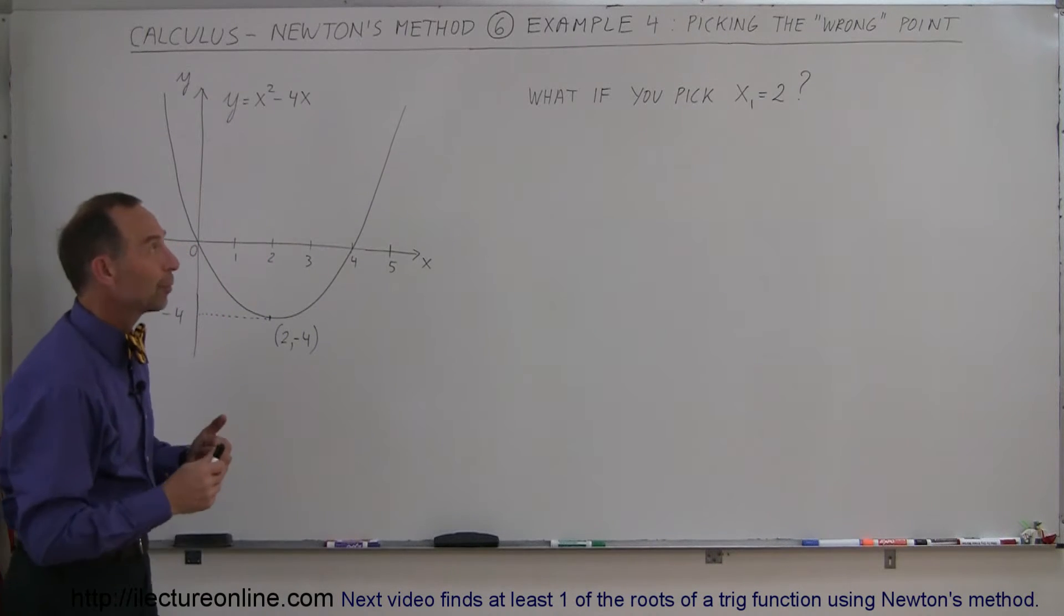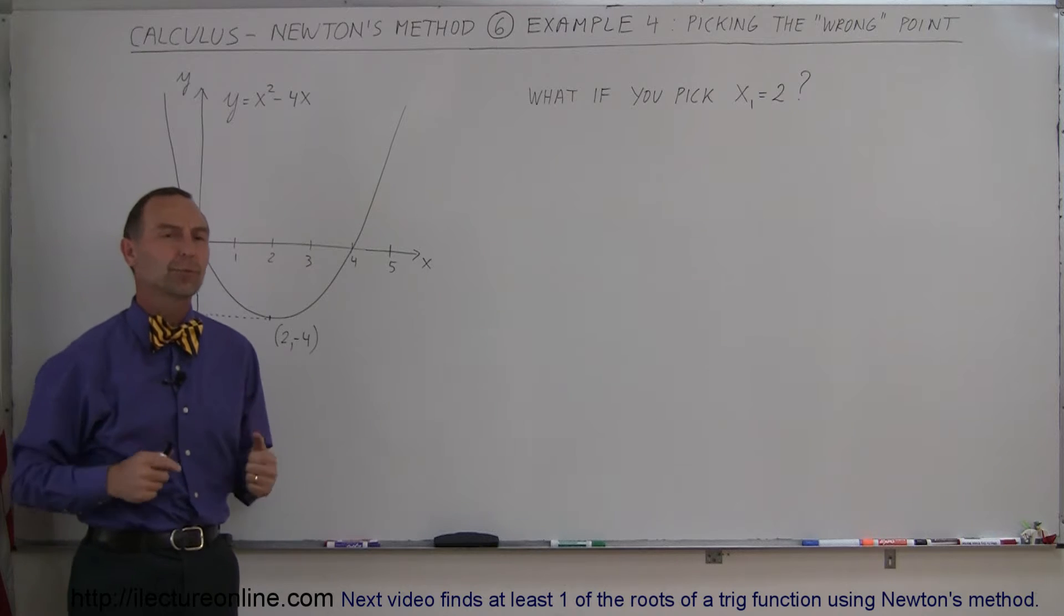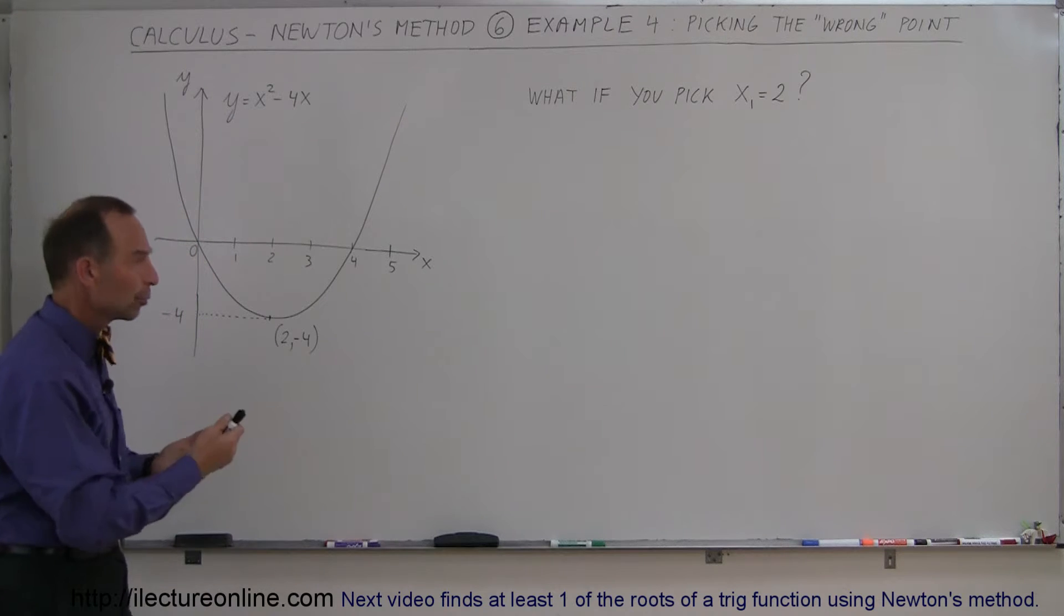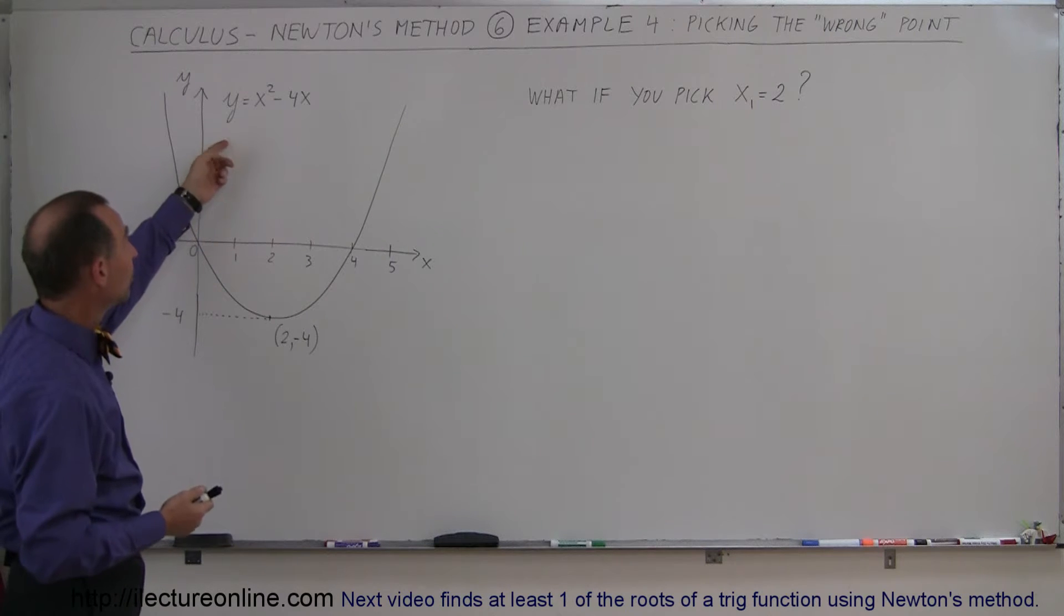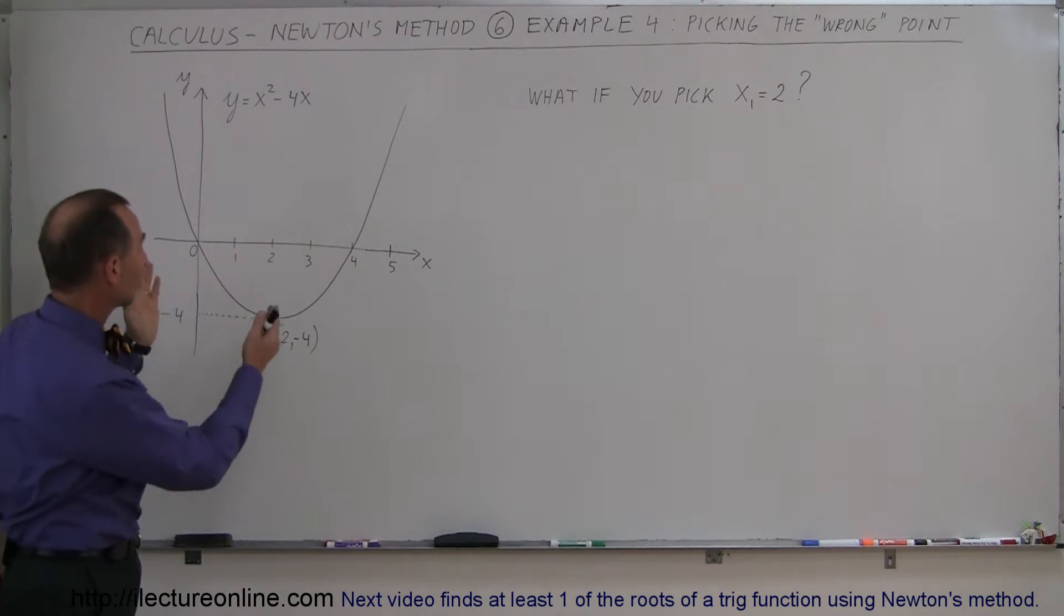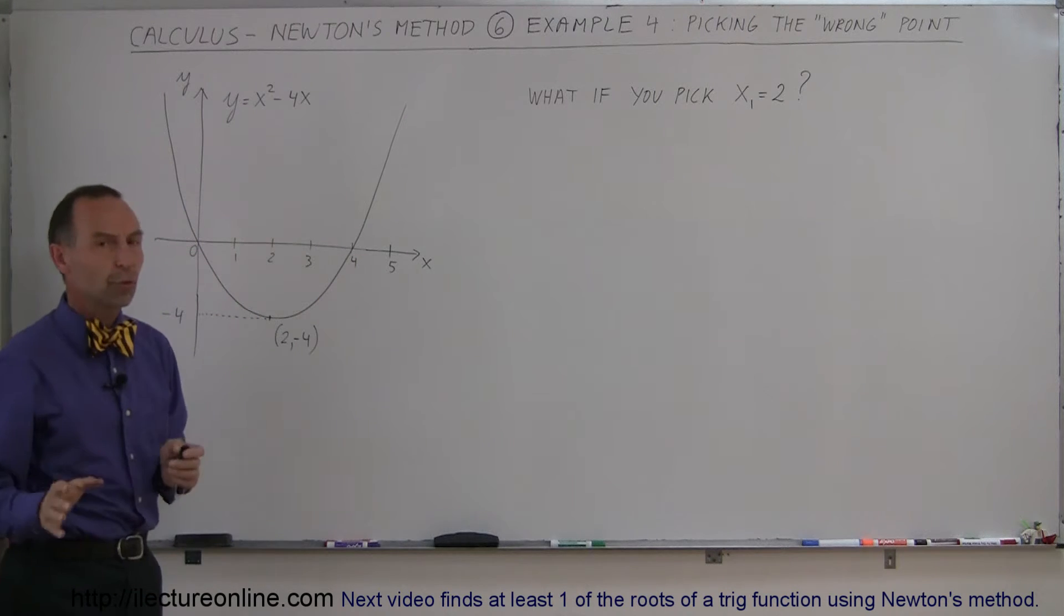Welcome to lectureonline, and here we're going to do an example where you might pick the so-called wrong first point to try and find one of the roots of your equation using Newton's method. So here we have an equation we've seen before, y equals x squared minus 4x, it's simply a parabola. Notice that it has a root at x equals 0 and a root at x equals 4.